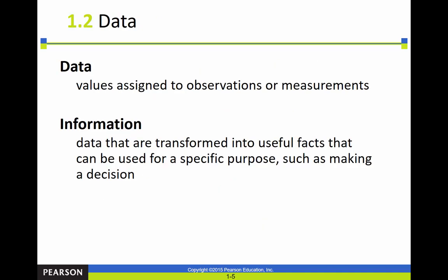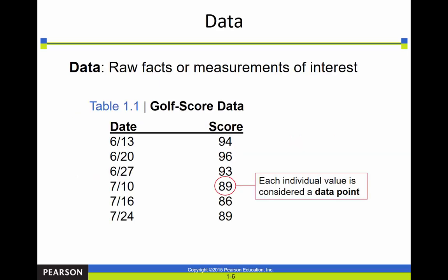Data just means values assigned to observations, and information is anything that consists of useful facts. Here's an example of some data — somebody's golf scores — and what we can see is over time it looks like his golf score is improving, but it's hard to tell much more than that just from this set of data points.